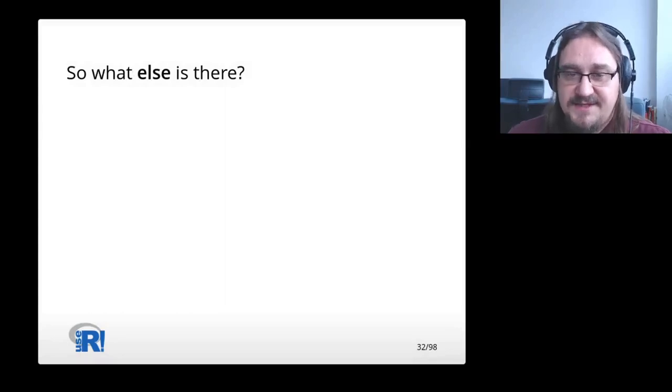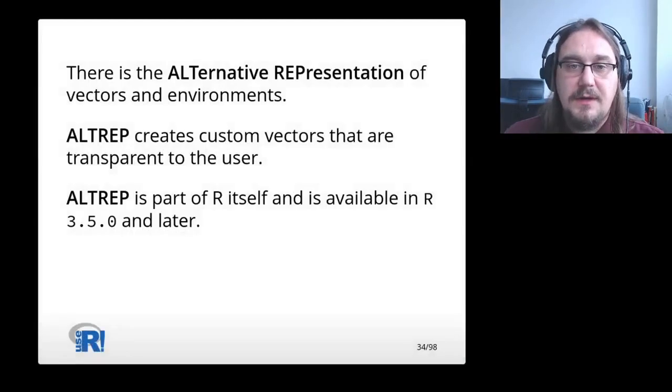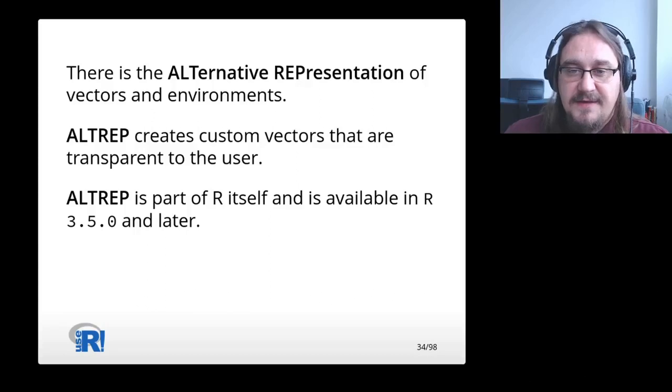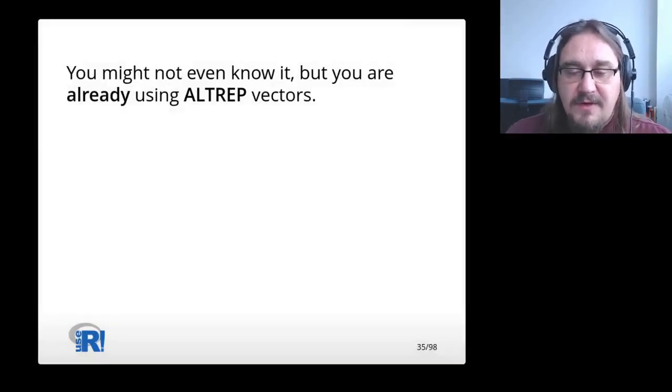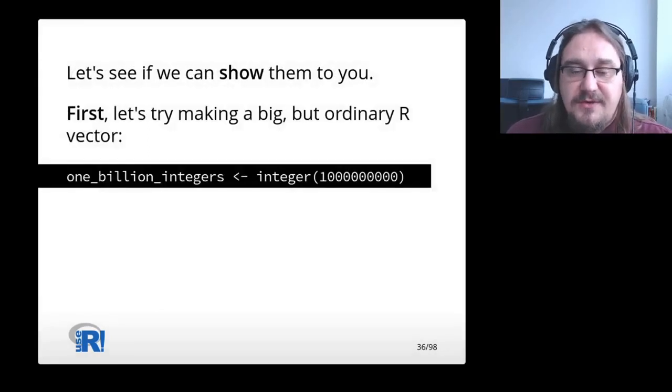So what else is there? There is the alternative representation of vectors and environments. Altrep creates custom vectors that are transparent to the user. Altrep is part of R itself and is available in R 3.5 and later. You might not even know it, but you are already using Altrep vectors. Let's see if we can show them to you.